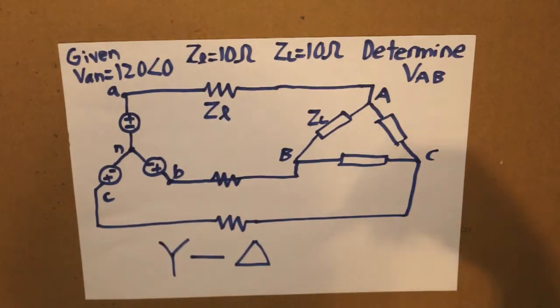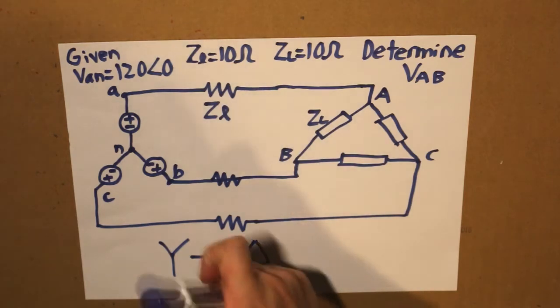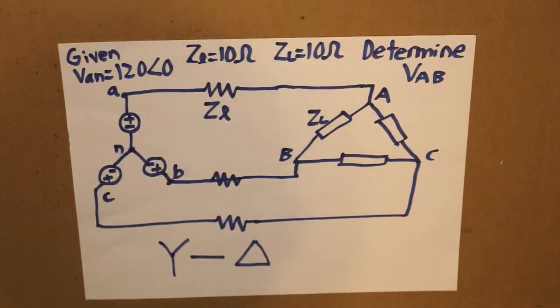So let's see what this question asks us. Given that our Y voltage is 120 volts, our line impedance is 10 ohms and our load impedance is 10 ohms as well, determine VAB or also known as our delta voltage.